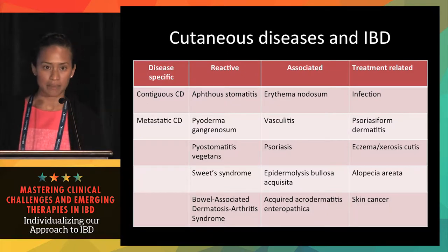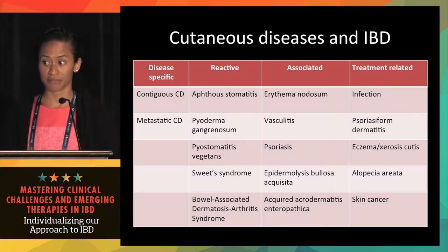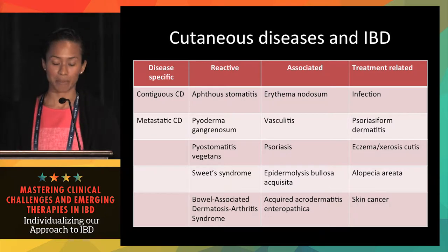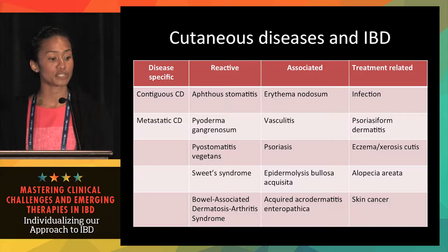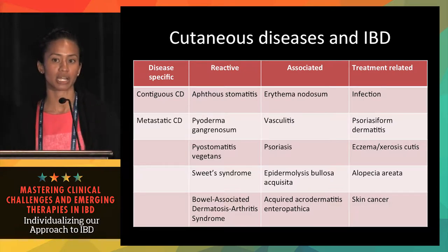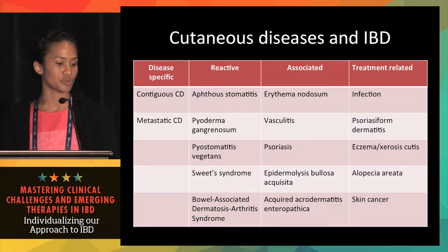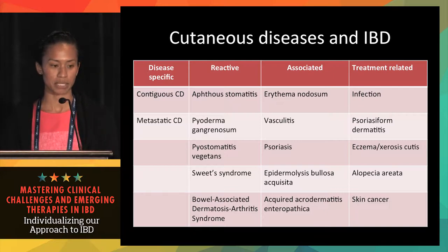Extraintestinal manifestations are common in IBD, and the skin is one of the organs most commonly affected. I've included a table that categorizes cutaneous diseases into four groups: disease-specific (Crohn's disease in the skin, contiguous or metastatic), reactive skin conditions sharing a pathogenic link to IBD, associated conditions occurring with greater prevalence in IBD patients, and treatment-induced skin disease.